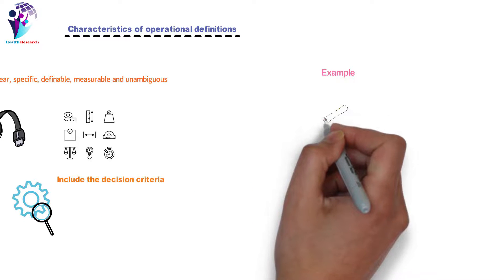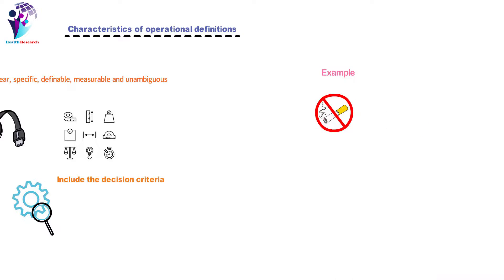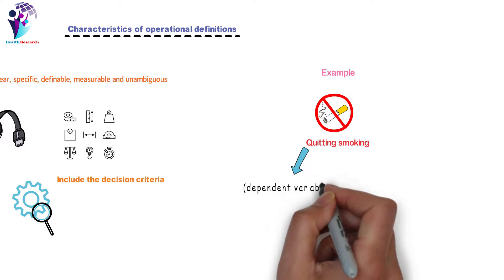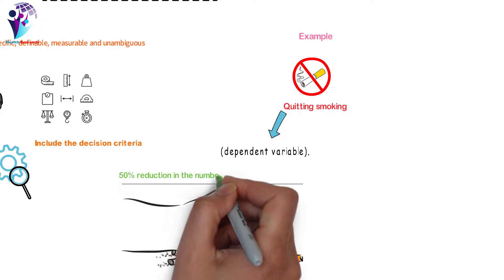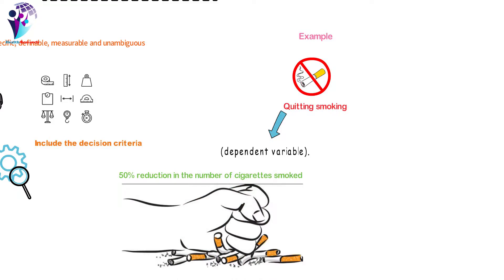For example, if you were studying ways of helping people stop smoking, smoking cessation would be an outcome measure which is dependent variable. You could measure smoking cessation as a person not smoking a cigarette for, a 50% reduction in the number of cigarettes smoked.